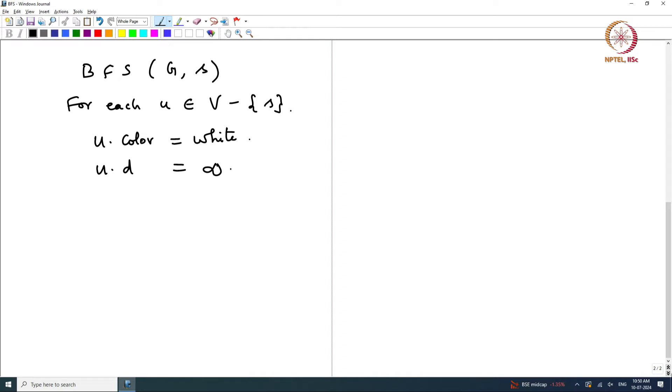The level number, the distance from the root is the number of hops. How many edges you jump over to reach u starting from source or starting from the root, how many edges you jump over. That is u.d. If you know it, it is a finite number. If you do not know it or if u is not reachable, it will be defined as infinity. And for the tree edges we have u.parent, u.p is nil. This is step 1.